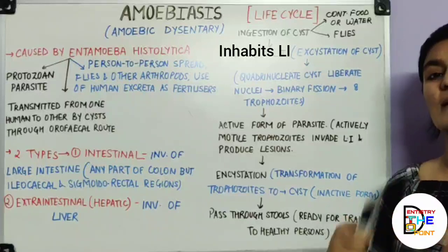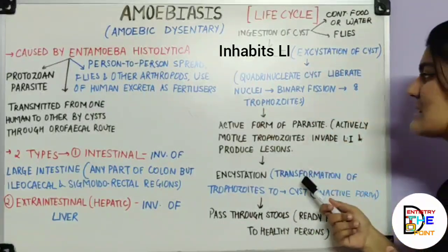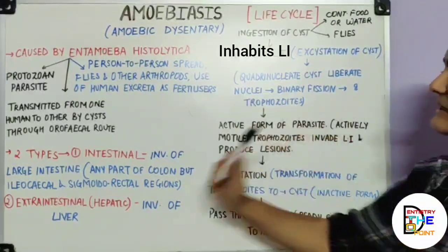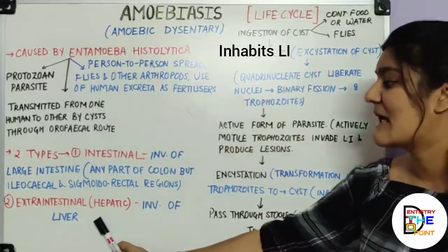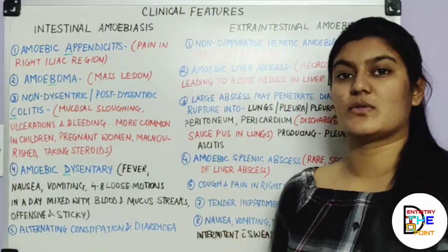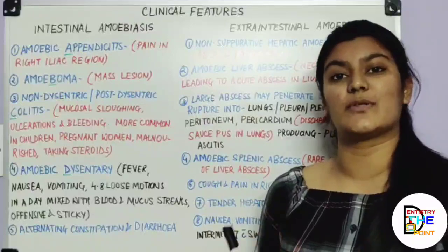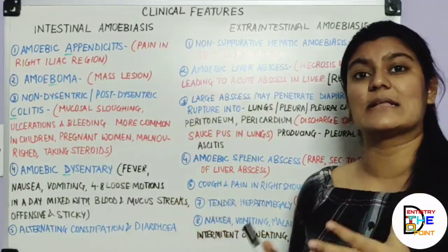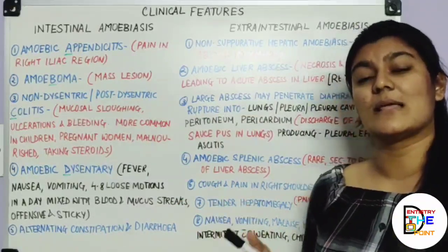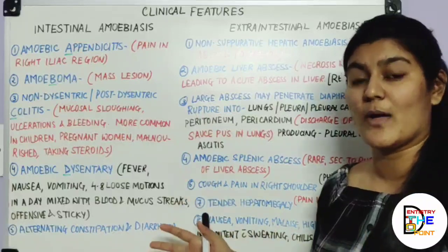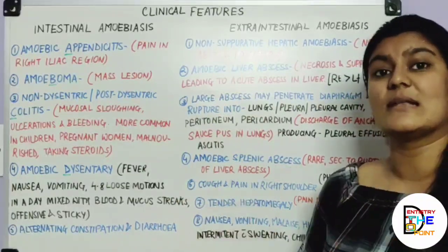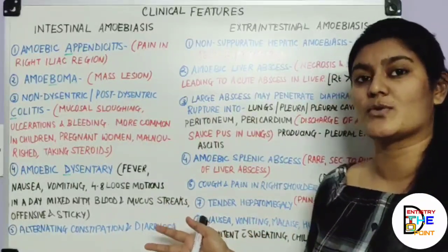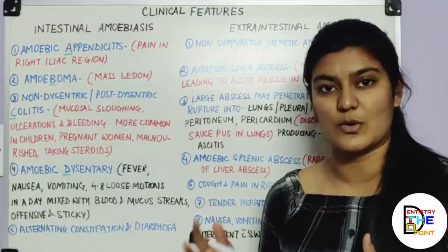In extra-intestinal amoebiasis, the same processes of excystation and encystation occur in the liver. If limited to the large intestine, it is intestinal amoebiasis; if the liver is invaded, it is extra-intestinal. One important point is the type of lesion produced by Entamoeba histolytica. These clinical signs and symptoms are the manifestations after the organism produces its characteristic lesions.